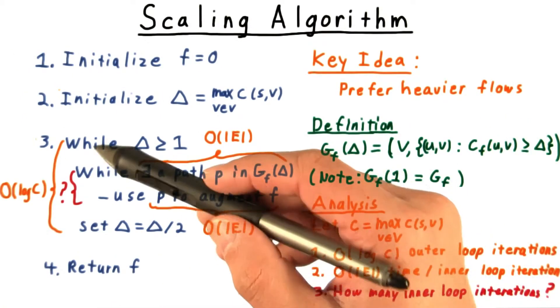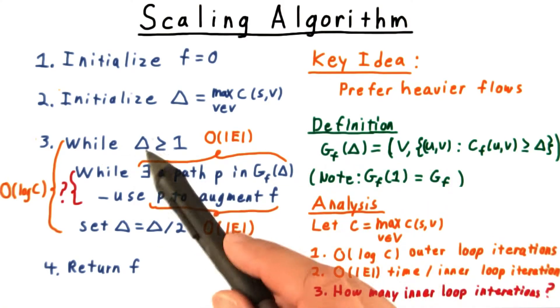By scaling phase, I mean an iteration of the outer loop here, where we have a fixed value of delta.